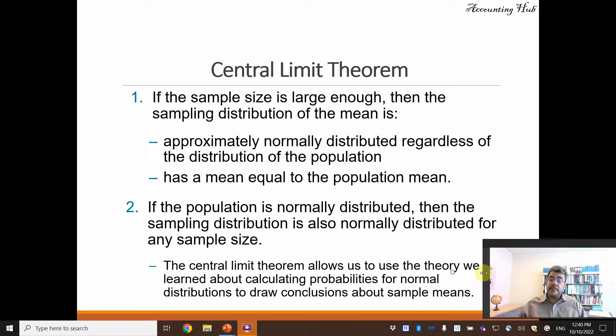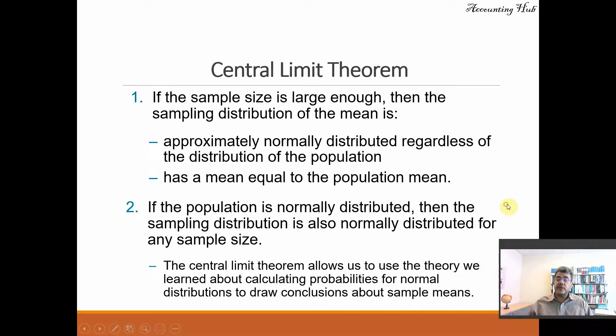If the sample size is large enough, then the sampling distribution of the mean is approximately normally distributed regardless of the distribution of the population. So it doesn't matter what the distribution of the population is. If our sample is large, we consider this sample as normal, and it has a mean equal to the population mean.